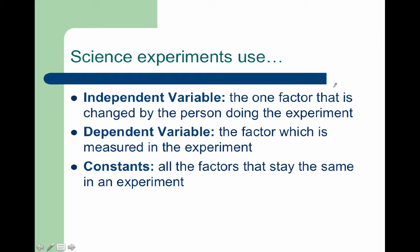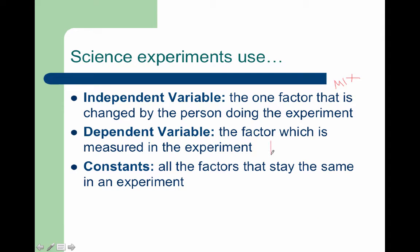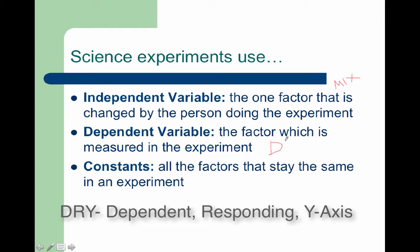One trick to help remember independent and dependent variable is MIX and DRY. Our independent variable is Manipulated — we're changing it — and in a graph it goes on the X-axis. Our dependent variable is DRY: it's Responding to the change we've made from our independent variable, and we graph it on the Y-axis.